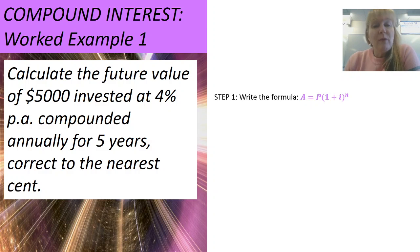Step one is always going to be the same. We write the formula. You're just going to find the formula sheet, and you're going to copy down the formula for compound interest. Step two, you should always state your variables.